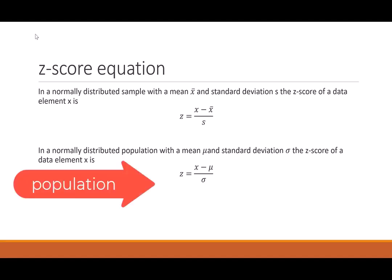If we happen to have a population, then same kind of thing happens. We would still have x, which is our data point, but we would want to compare to mu, our mean, and sigma, our standard deviation. So just a slight little difference between if we have a sample or a population, but otherwise this conversion looks the same.